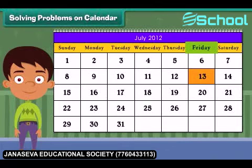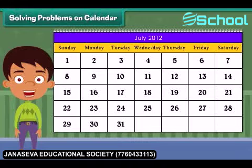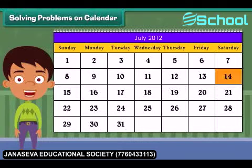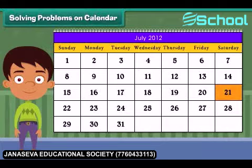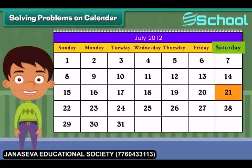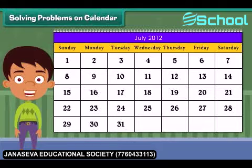What is the date on the second Saturday? It is the 14th of July. Is the 21st a Sunday? No, it is not a Sunday — it is a Saturday. How many Thursdays are there in this month? There are four Thursdays in this month.